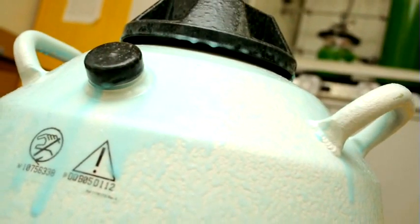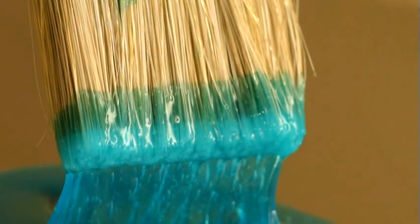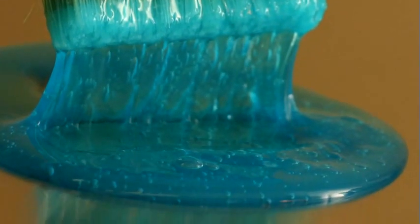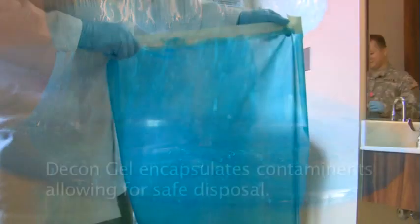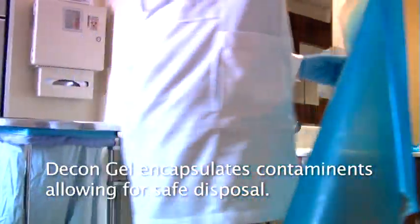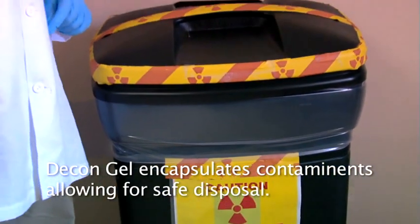Decongel uses a variety of strategies and components including chelators to bind contaminants and draw them into the film. Contaminants are entrapped in the semi-crystalline polymer matrix as the film dries, allowing the contamination to be safely transferred to an appropriate containment vessel.